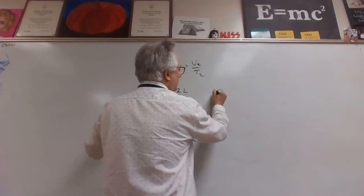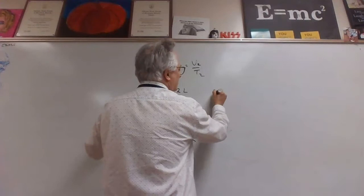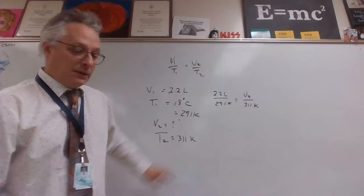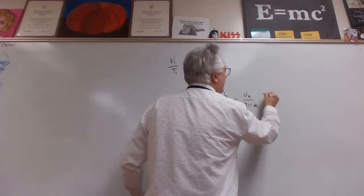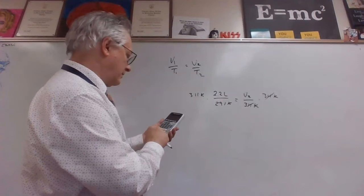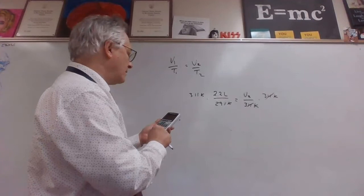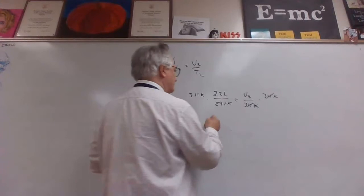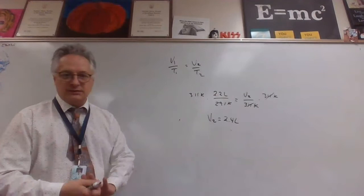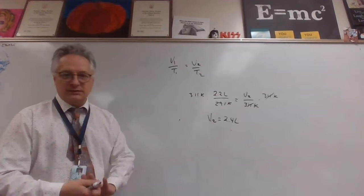Plugging in: 2.2 liters over 291 Kelvin equals V2 over 311 Kelvin. Multiply both sides by 311 to isolate V2: 311 divided by 291 times 2.2 gives approximately 2.35, which we round to 2.4 liters. So the gas expands a little bit in volume — not a tremendous amount of change.